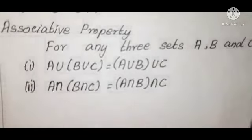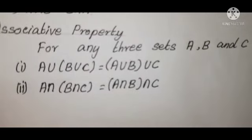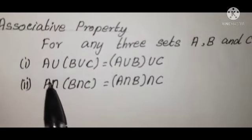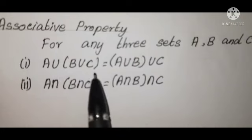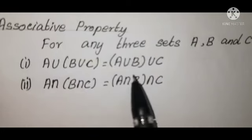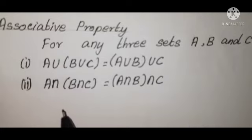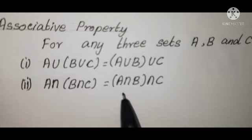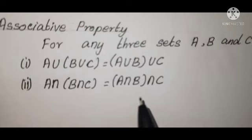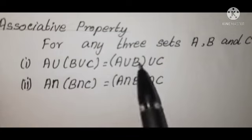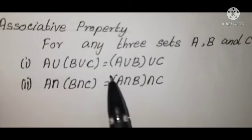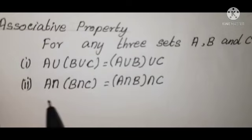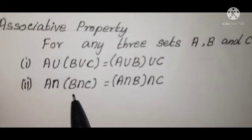Associative property: for any three sets A, B, and C. First property: A union (B union C) equals (A union B) union C. Second property: A intersection (B intersection C) equals (A intersection B) intersection C. The first is the associative property of union; the second is the associative property of intersection.